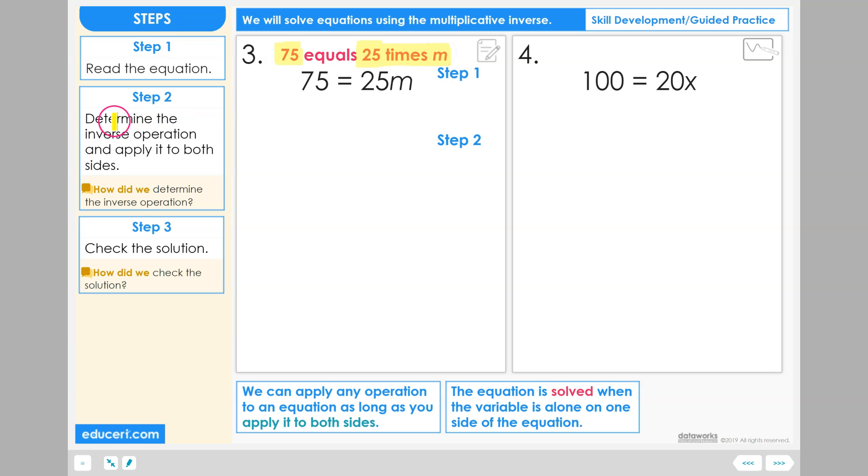Step 2: Determine the inverse operation and apply it to both sides. The solved equation is when the variable is alone on one side of the equation. Now our goal is to get m to be all alone on this side of the equation.